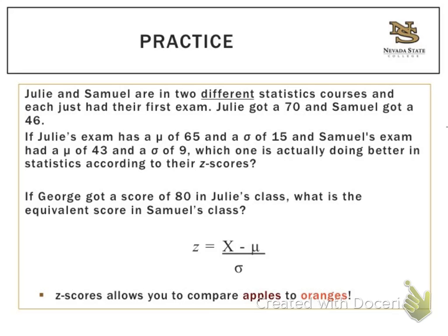Next you'll find out about George. If George got a score of 80 in Julie's class, what would be the equivalent score in Samuel's class? So we'll answer these questions one at a time, but for both we'll be using the classic z formula, where z equals the score minus the mean divided by the standard deviation. So I'm going to take this information and write down on the page on which I'll be doing my work.